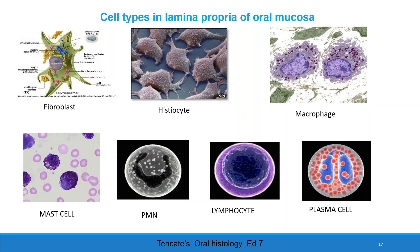Histiocytes are spindle-shaped cells and are precursors for macrophages. Macrophages have round pale-staining nuclei and help in phagocytosis. Mast cells are round with basophilic nuclei and help in secretion of inflammatory mediators like heparin and histamine. PMNs are round and lobed nucleus cells that help in phagocytosis and cell killing. Lymphocytes have round dark-staining nuclei and take part in humoral and cell-mediated immunity. Plasma cells contain a cartwheel nucleus and help in synthesis of immunoglobulin.